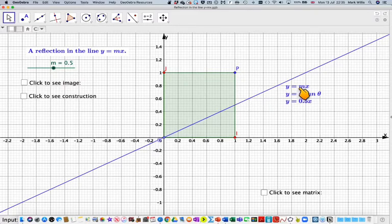But what we've got to remember is that m is the same as the tangent of the angle that this line makes with this axis here.